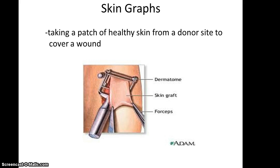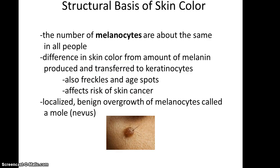Skin grafts — they have a little skin peeler known as a dermatome, which can remove healthy skin from a donor site that can then be used elsewhere to cover a wound, say from extensive burning in another area.